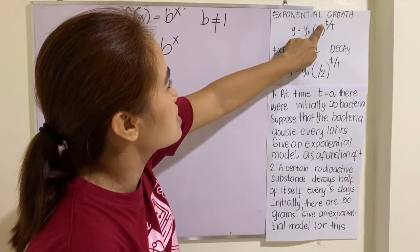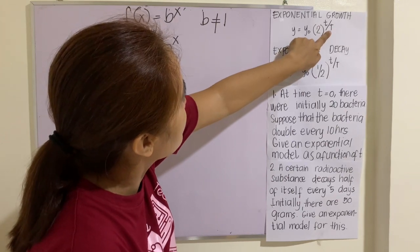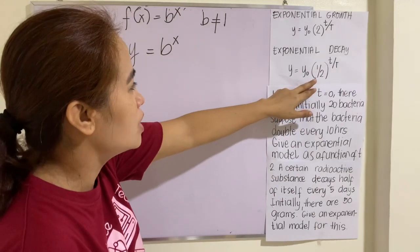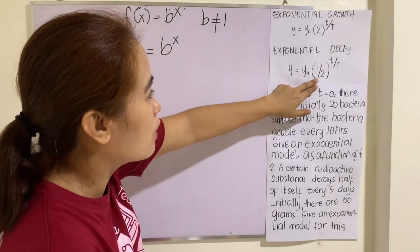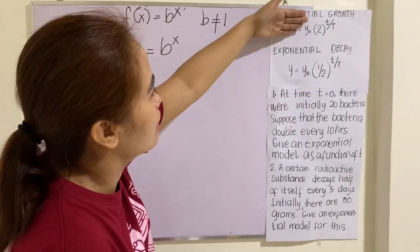T, this small t here is the initial time. And the big T here is the final time. Same as in exponential decay. In exponential decay, this means half. So meaning this one is decaying and this one is growing.